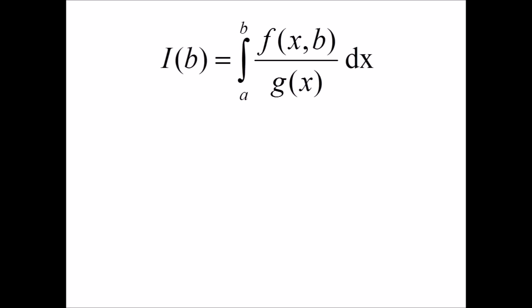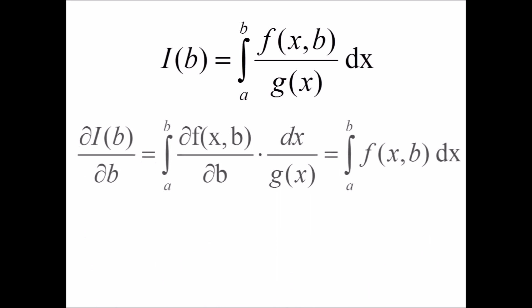If we insert the ansatz that taking the partial derivative of the integral with respect to b eliminates the denominator, we'll obtain that the partial derivative of i of b with respect to b will give us the integral of f rather than an integral of a rational function. If f of x of b is of a simple form, we'll be able to integrate the function and then resultantly take the anti-derivative with respect to b and obtain i of b.